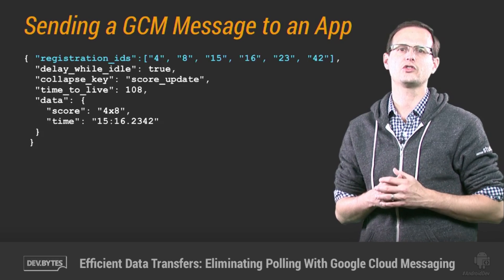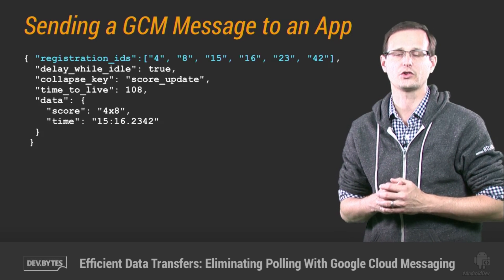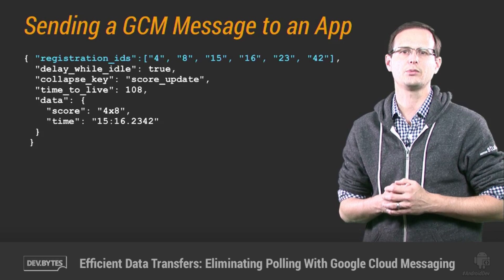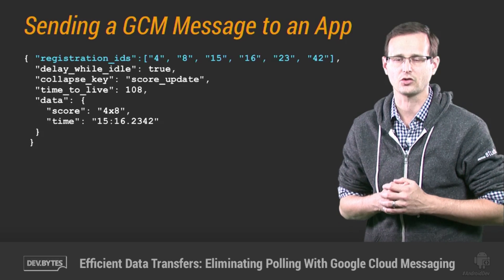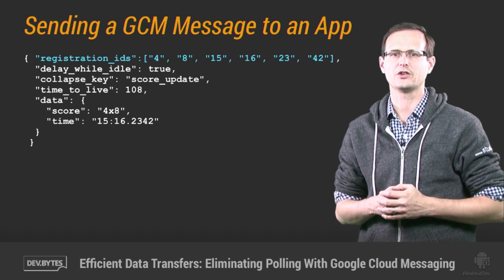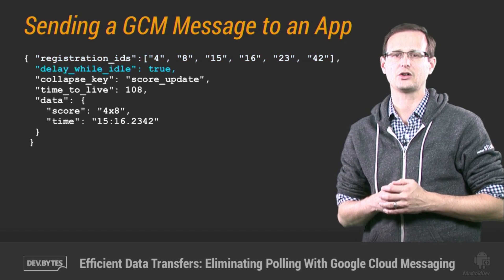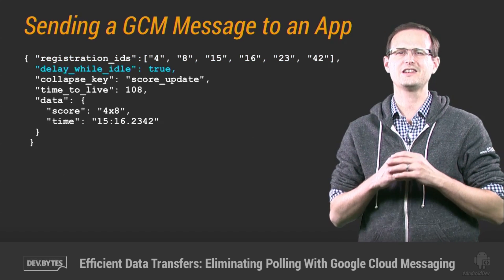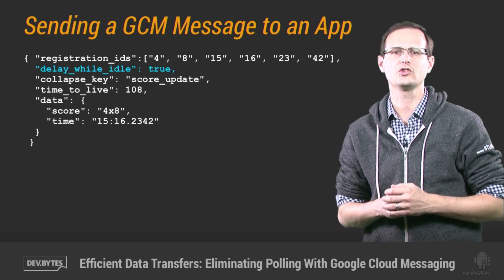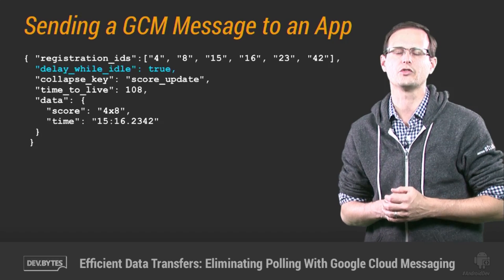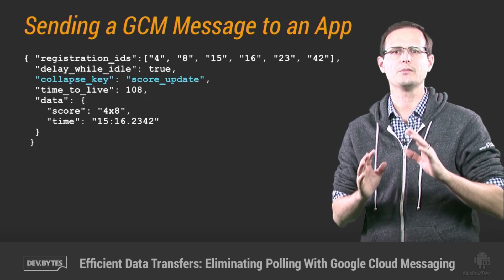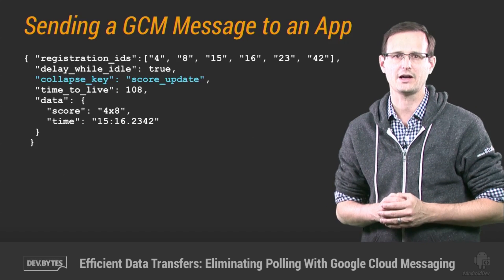Here we're using JSON to create a message, starting with the registration IDs to which we want to transmit our message. By default, your app will receive GCM messages even if it's not running and the phone is on standby. You can help minimize battery drain by setting delay_while_idle to true, indicating that your message doesn't need to be sent immediately if the device is on standby. Instead, these messages will be queued until the device becomes active. In fact, if you also set a collapse key, only one message will be sent when the device does become active.